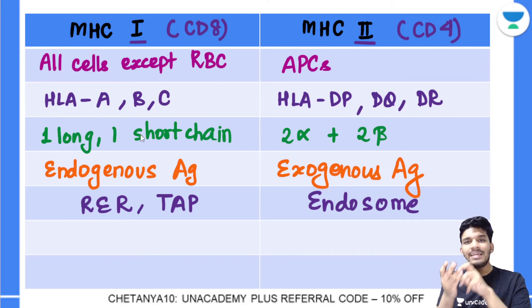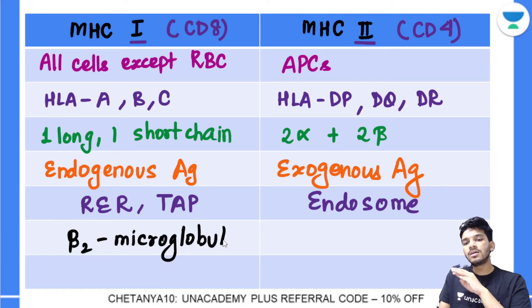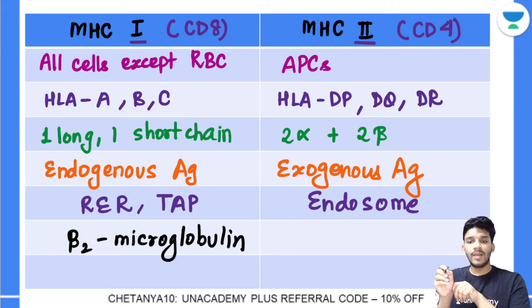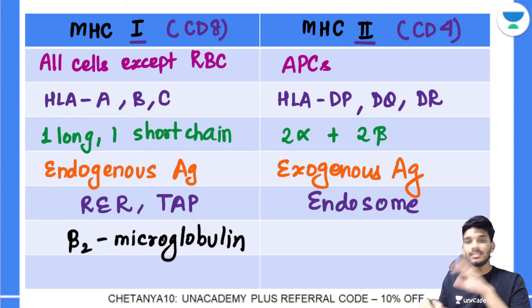One final point: MHC2 has four protein chains while MHC1 has only two. Because of this, MHC1 has an additional associated protein called Beta-2 Microglobulin. So Beta-2 Microglobulin is the extra protein associated with MHC1.